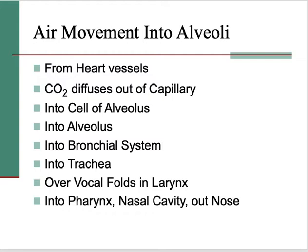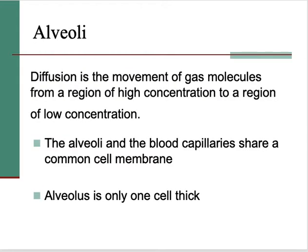What exactly is happening at the alveoli and how are they adapted for it? The main process is diffusion — the movement of a substance from an area of high concentration to an area of low concentration. The alveoli have lots of capillaries around them, giving a very good blood supply. There are loads of alveoli, which increases the surface area. The alveoli and blood capillaries share a common cell membrane, so it's a very thin surface for gases to diffuse across — the alveolus is only one cell thick. Also, the air gets moistened as it goes down, which helps with diffusion.